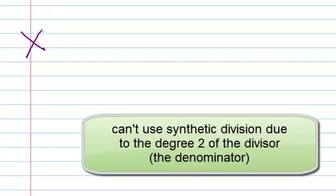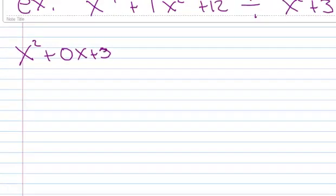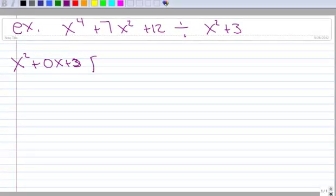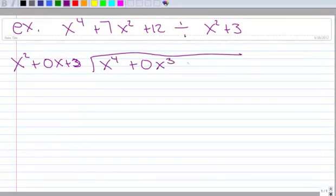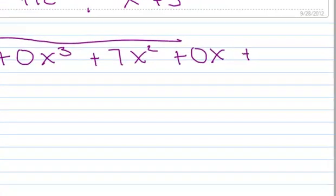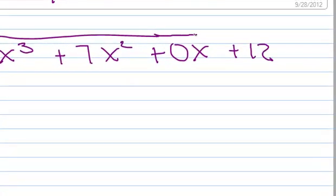So, we're going to divide by x squared plus 0x plus 3. Notice how I filled in the missing term there with a 0. And I'm going to divide into x to the fourth plus 0x cubed plus 7x squared plus 0x plus 12. All right. So, here we go, ready to start.